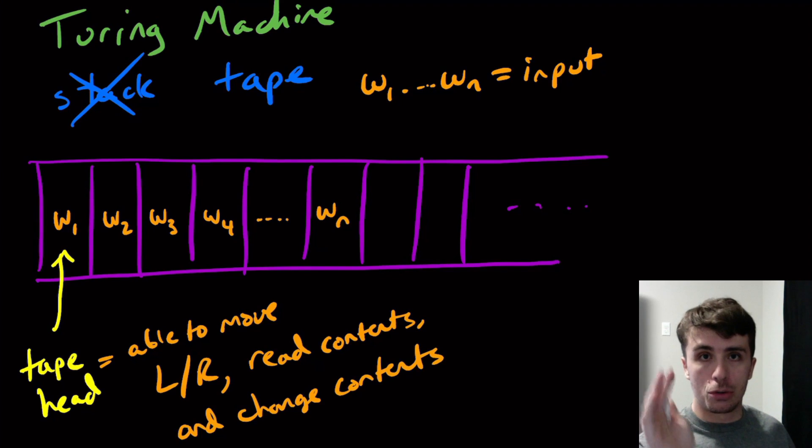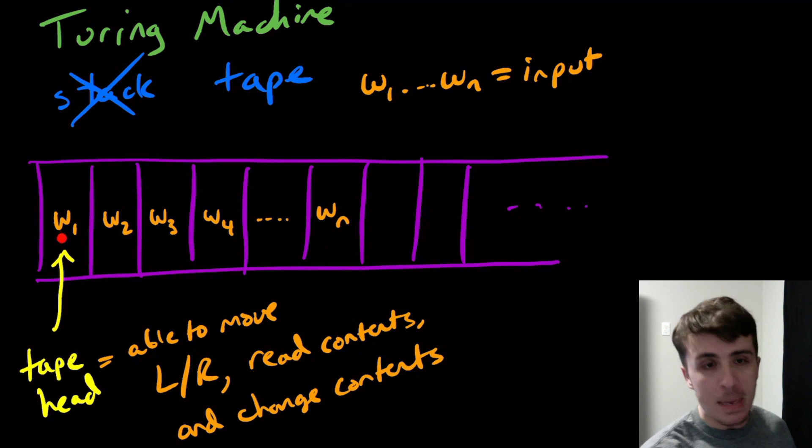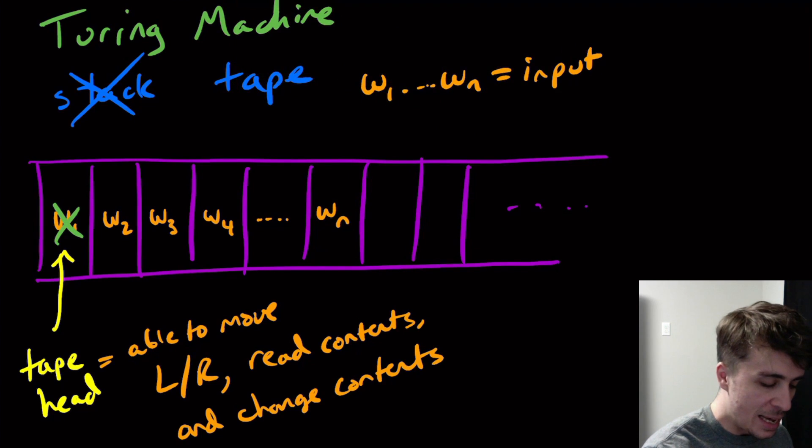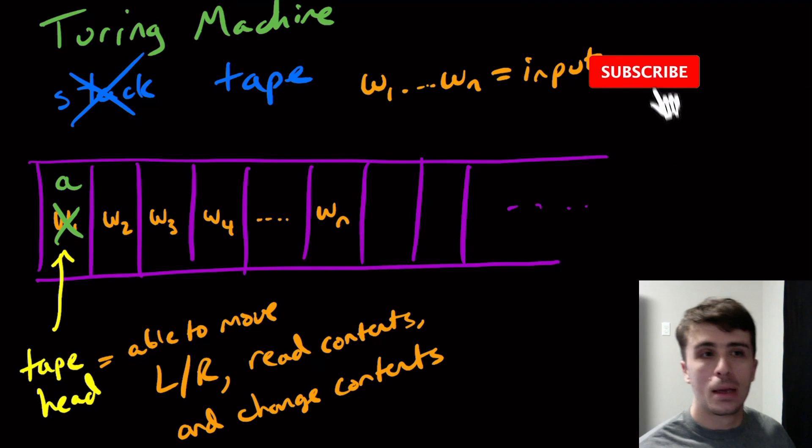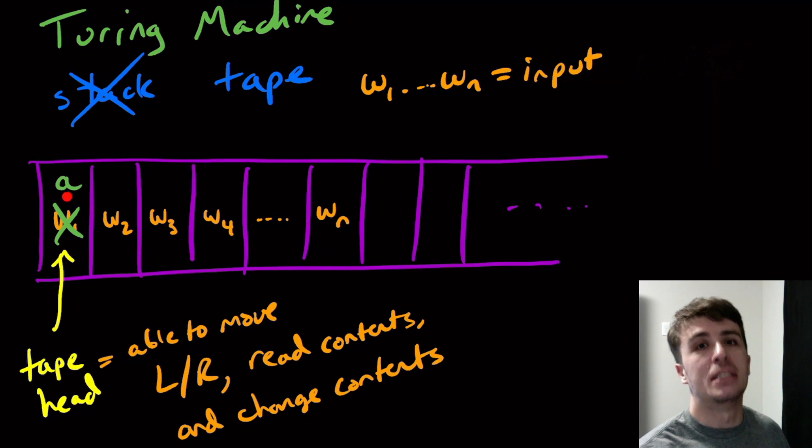It's able to look at this W1 right here and see, okay, it is a W1, then maybe move right. After whatever is going to happen next, the tape head is going to point at this cell. We can change that W1 into an A, for example. This cell is going to permanently change until I come back and change it possibly at some later point.